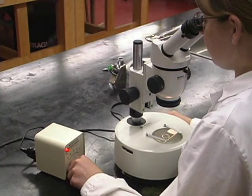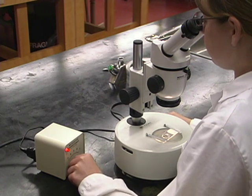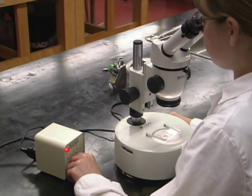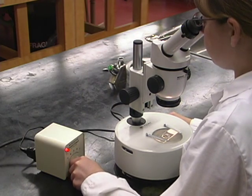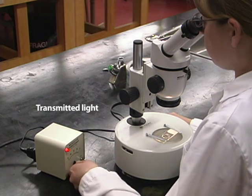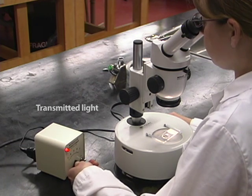If an object is transparent or can be made translucent by cutting it into thin sections, light can be passed through the specimen. This is called transmitted light. Transmitted light is supplied from below the object.